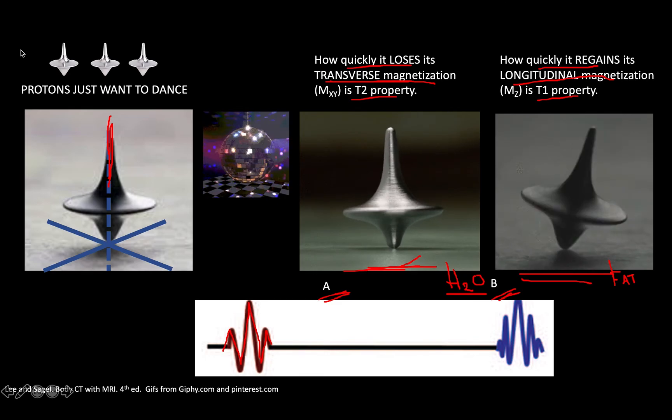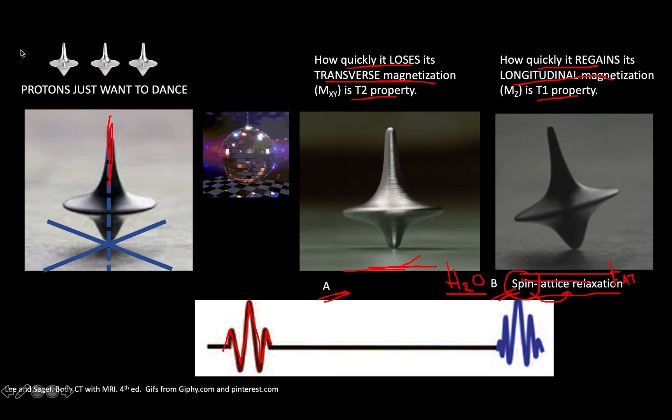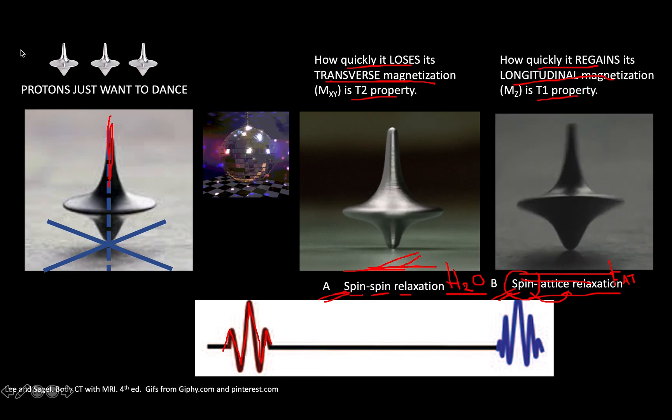These concepts of relaxation are described based on where the extra energy is transferred to. Here on top B, the extra energy from the spinning proton is lost to its environment. That's why we call it spin-lattice relaxation - energy from the spin is transferred to the environment or the lattice. In top A, the extra energy from the top is given or donated to its neighbor spinning proton. That's why it's called spin-spin relaxation.